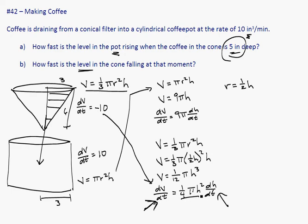Right, and these numbers will be positive, so we're going to have a negative divided by a positive, which means dh/dt is going to be negative. Which is what we want, because the level—the height of the coffee in the cone—is falling, so it's good that we're getting a negative.